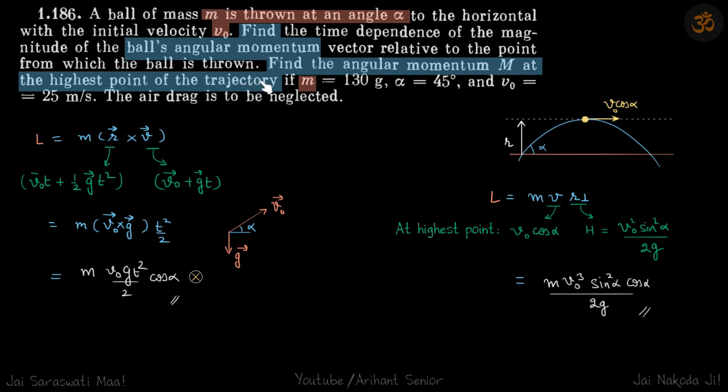Let's just write the form of angular momentum and put the values of position and velocity. So angular momentum is m into r cross v. R of the projectile is v naught t plus half g t square where this is the initial velocity.